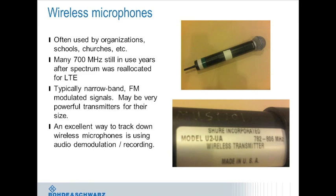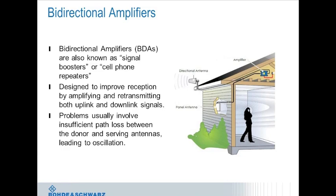Wireless microphones are an excellent example of imperfect spectrum re-farming. Although the FCC mandated discontinuing use of 700 MHz wireless microphones following LTE's allocation to that band, it has taken significant time to locate and remove them — some with surprisingly high output levels for handheld battery-powered devices. The good news is these devices generally use narrowband FM modulation, allowing audio demodulation with a proper receiver — you can listen to or even record the audio, which is extremely helpful in locating them. A recording of someone's own voice is difficult to argue with.